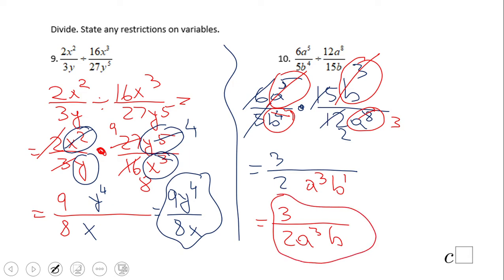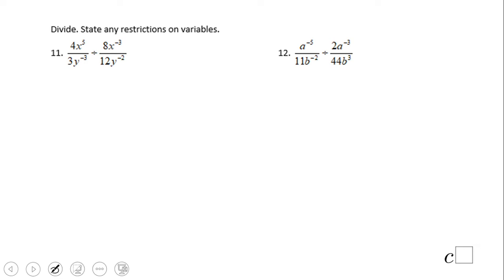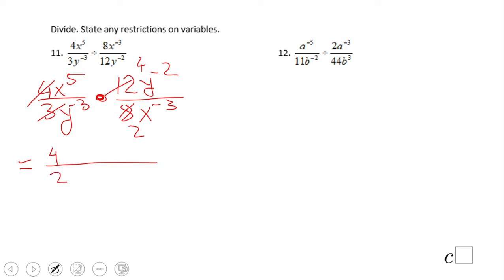Let's take a look at 11 and you're gonna try 12. What do you notice on 11? Similar problem, however we have negative exponents. Here I like to use laws of exponents. First, let's do the regular numbers: 4 goes into 8 two times, 3 goes into 12 four times, so we have 4 over 2.